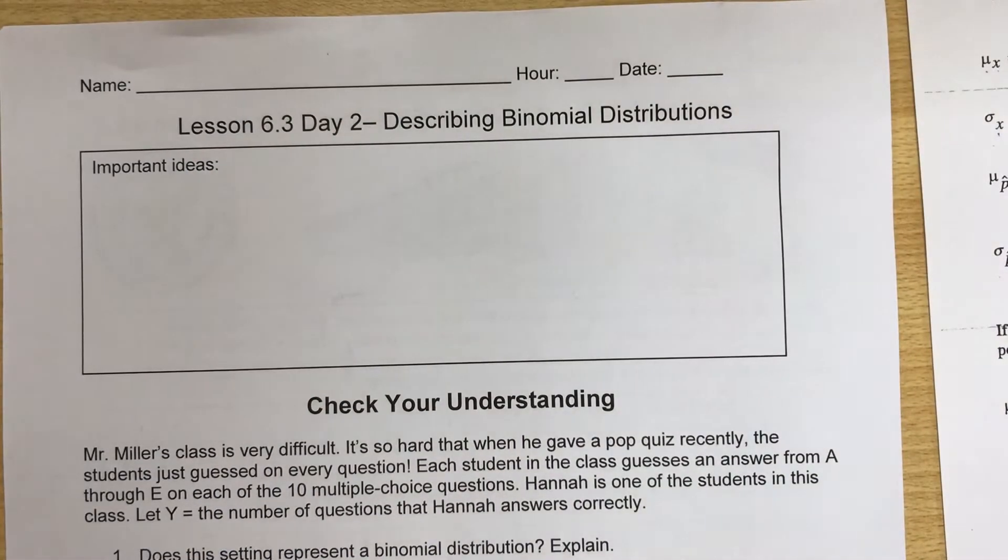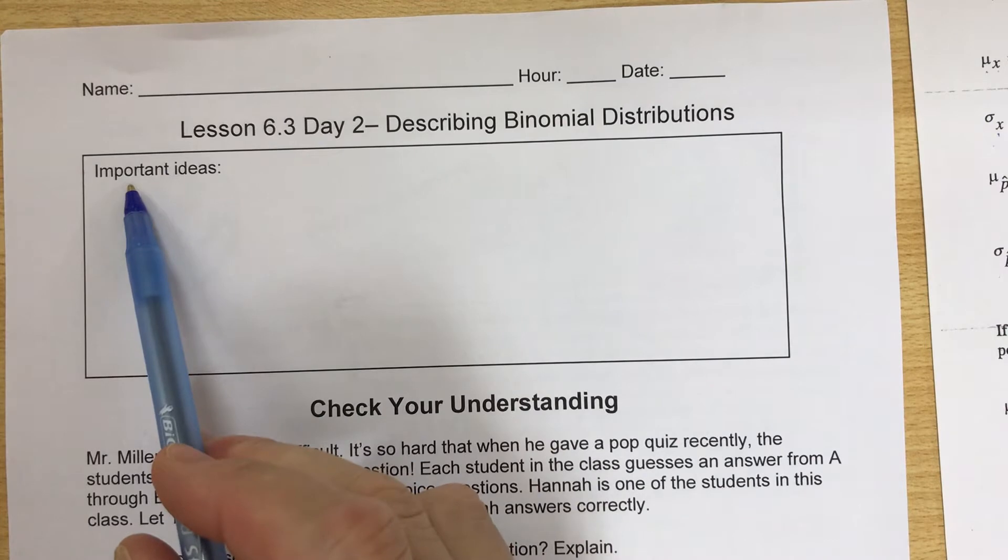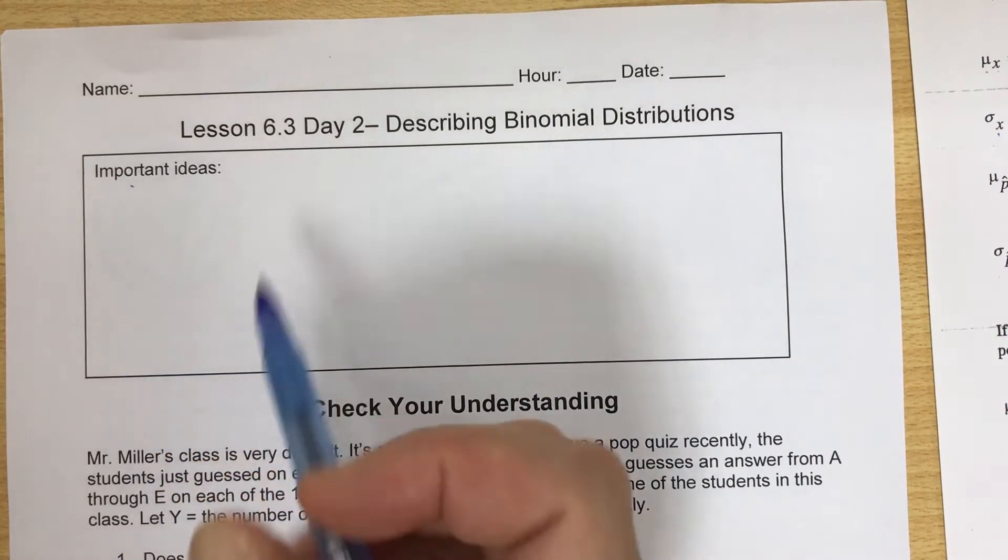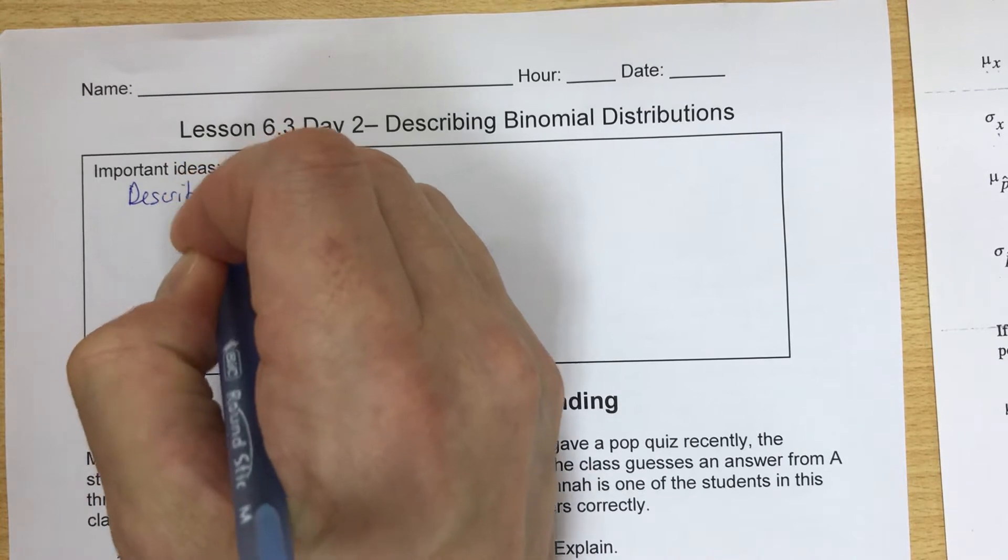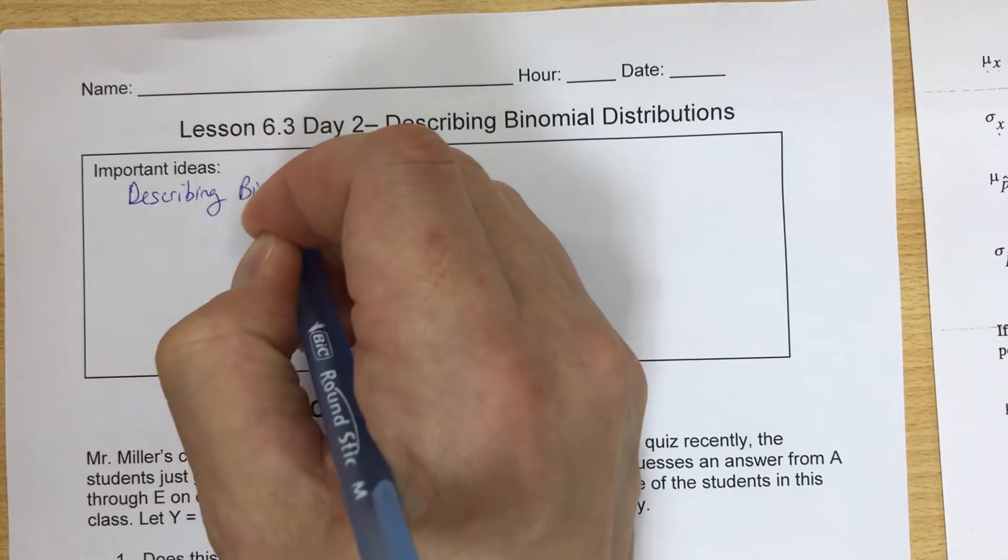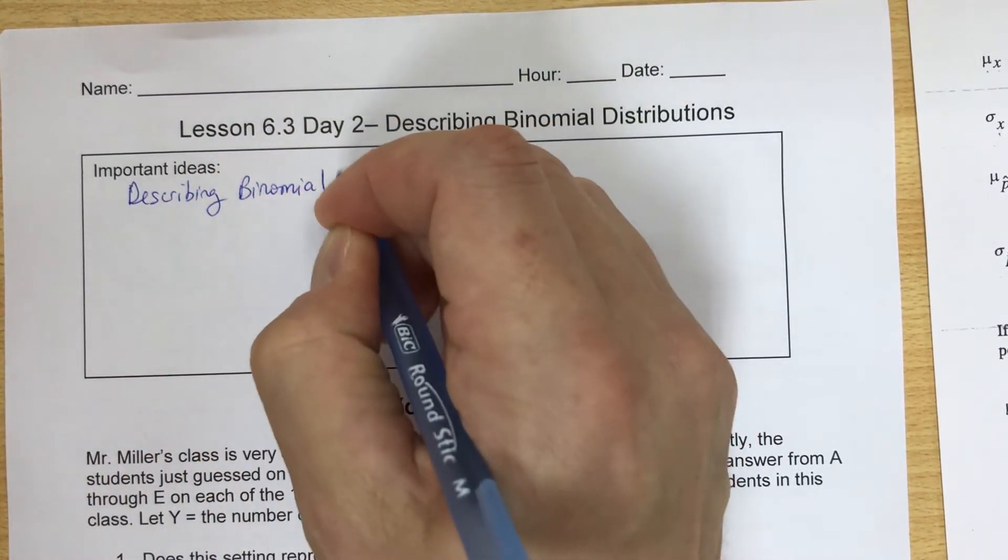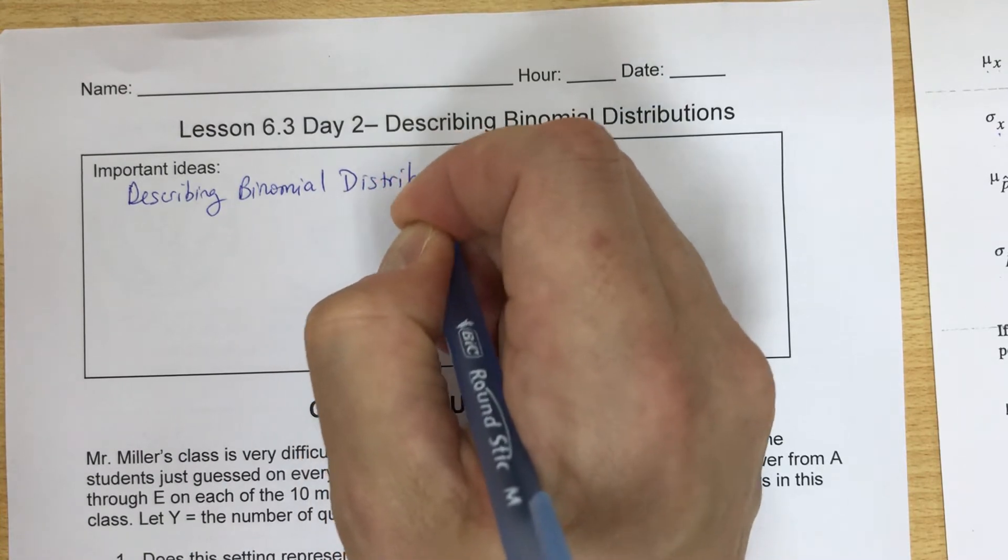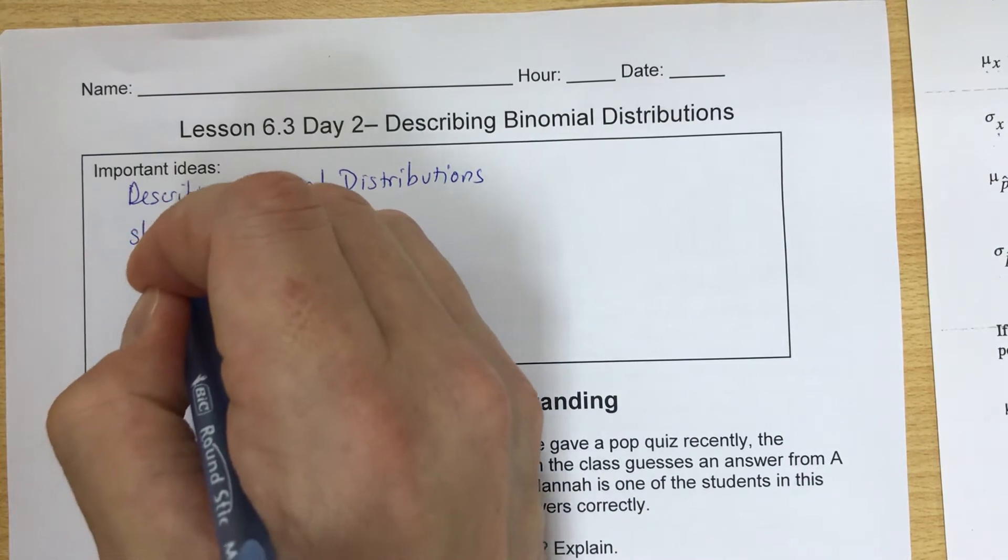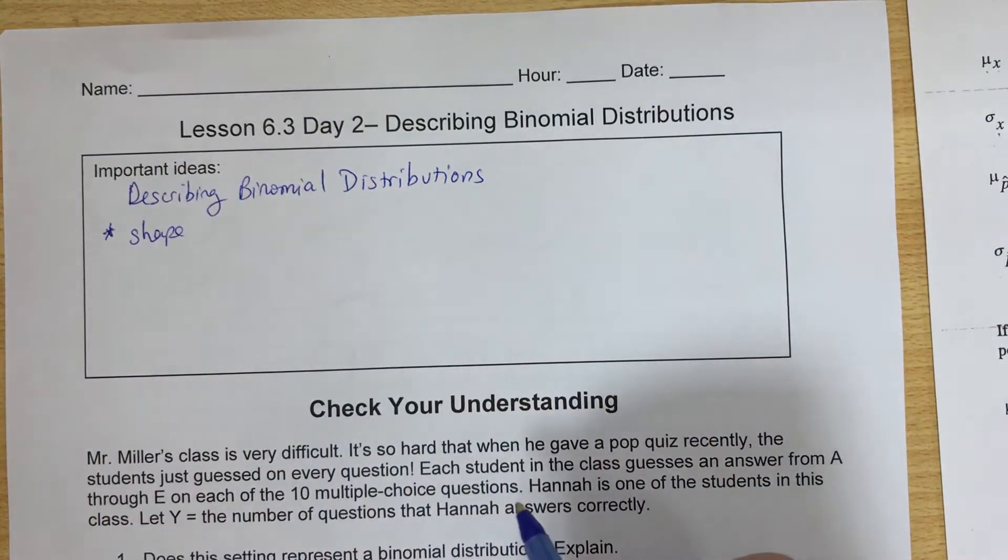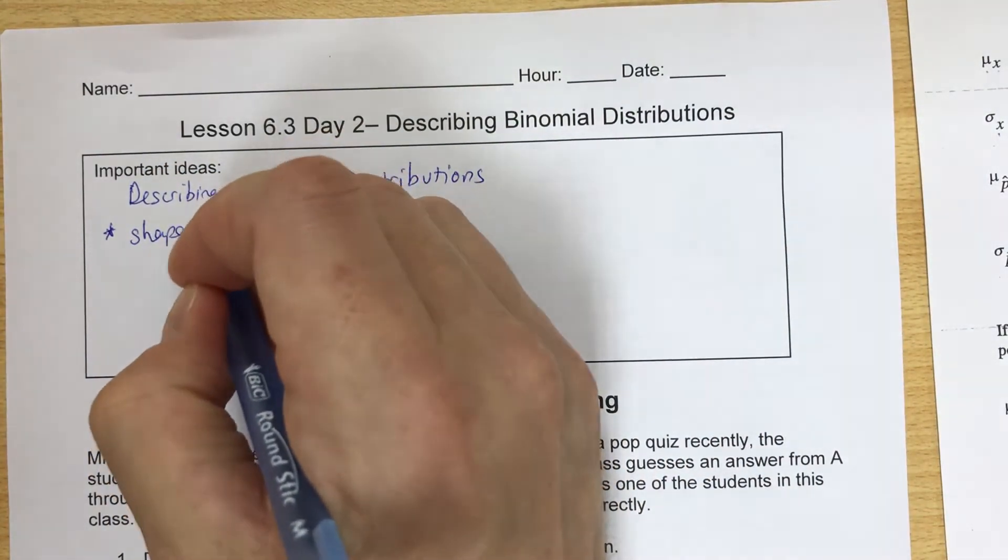Okay, so we're back for part two. Let's kind of summarize what our important ideas are here. When we are describing binomial distributions, if we want to describe what's happening in terms of the shape, we want to make a histogram.